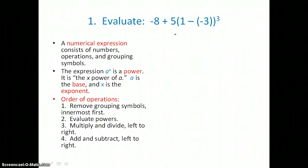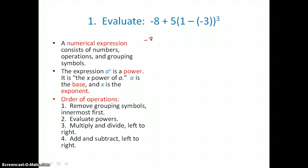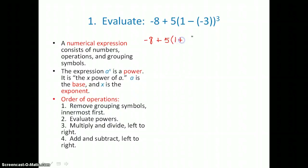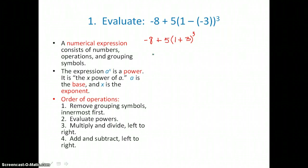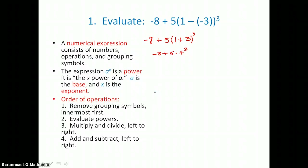We will start by subtracting inside parentheses, but we don't subtract in algebra — we add the opposite. So inside parentheses, this becomes negative 8 plus 5 times the quantity 1 plus 3. The opposite of negative 3 is positive 3. We've removed grouping symbols by adding inside parentheses. 1 plus 3 is 4, so we have negative 8 plus 5 times 4 cubed.